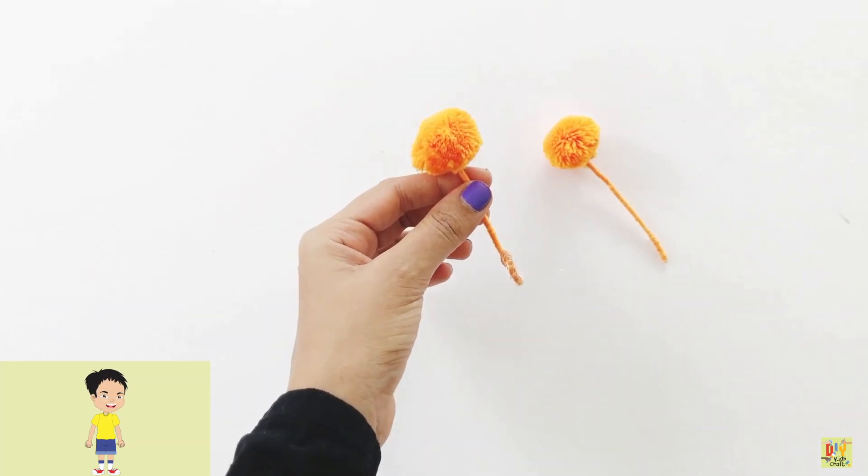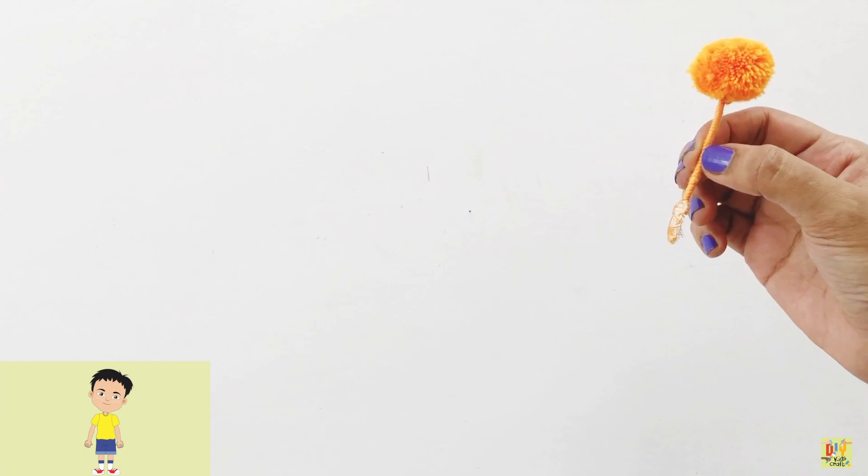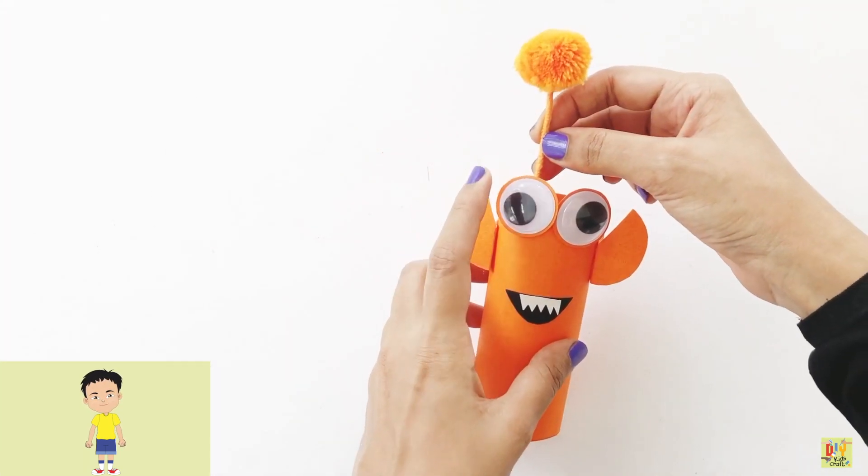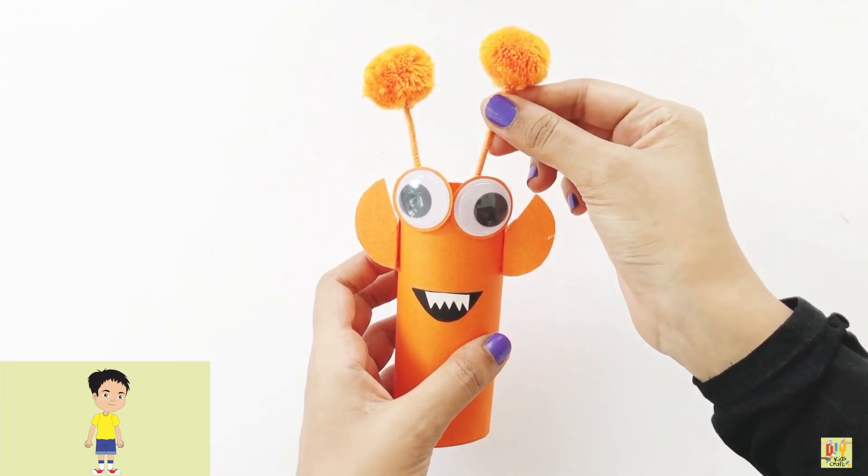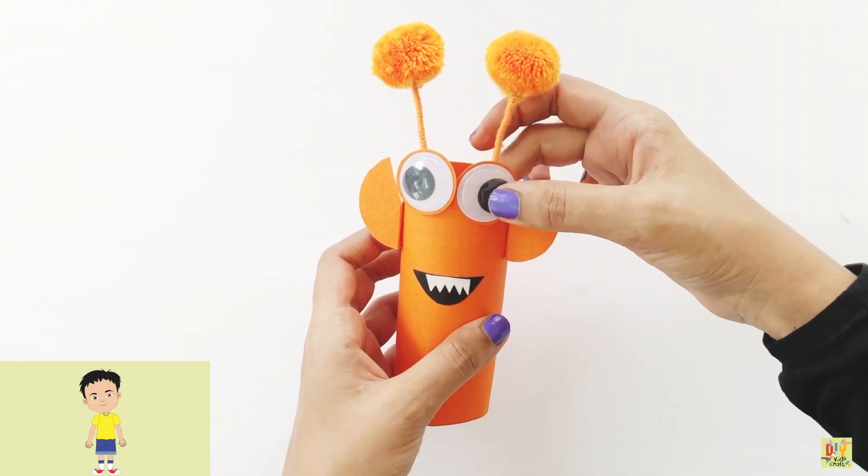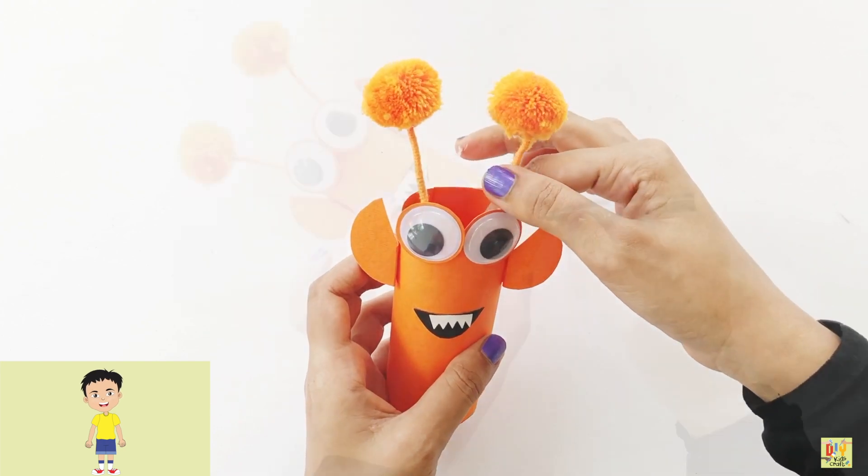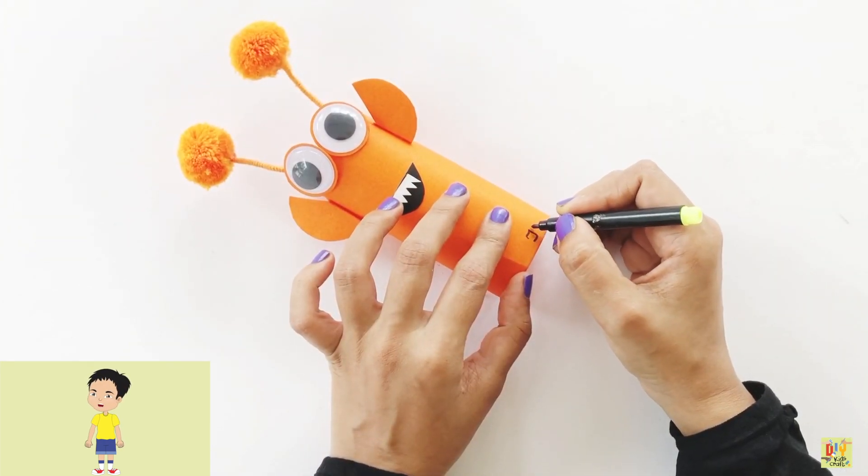After that, place the antenna above the monster's eye. Same goes with the other one. And we're done making our paper monster.